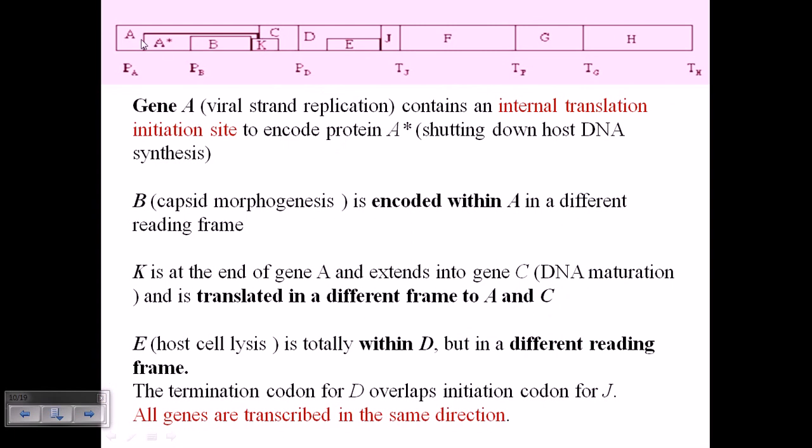Gene A, for example - this first part is gene A - is called a viral standard replication gene which contains the internal translation initiation site to encode the protein A*. This A* means it's shutting down the host's DNA synthesis. So we require this protein A or gene A to be expressed at the very first time.